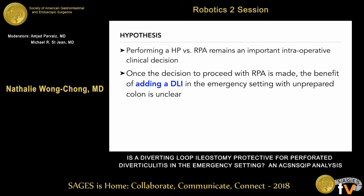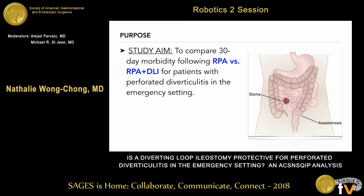We know that performing a Hartman's versus a primary anastomosis is an important intraoperative clinical decision made on a case-by-case basis. However, once a decision to proceed with primary anastomosis is made, the benefit of adding a loop ileostomy in the emergency setting where the colon has not been bowel prepped is unclear. The aim of our study was to compare 30-day morbidity following primary anastomosis with or without an ileostomy for patients with perforated diverticulitis in the emergency setting.